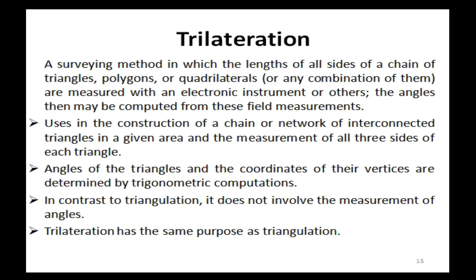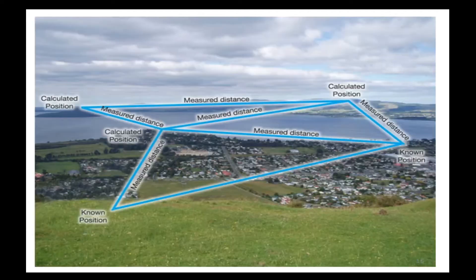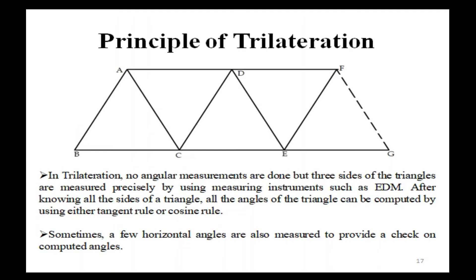Trilateration has the same purpose as triangulation. Principle of trilateration: no angular measurements are done, but the three sides of the triangles are measured precisely using instruments such as EDM (Electronic Distance Measurement). After knowing all three sides of a triangle, all the angles can be computed using either the tangent rule or the cosine rule. Sometimes a few horizontal angles are also measured to provide a check on the computed angles.